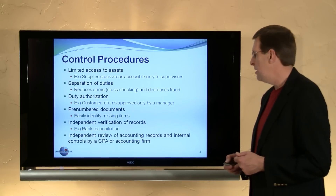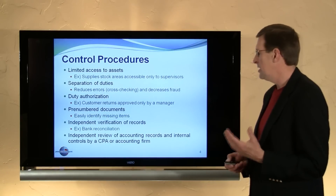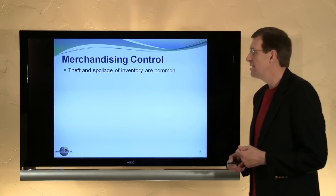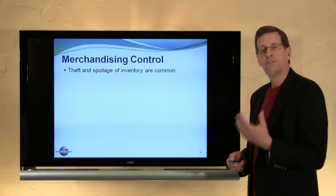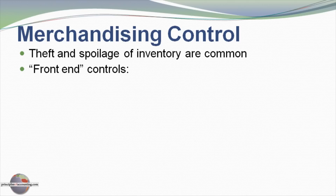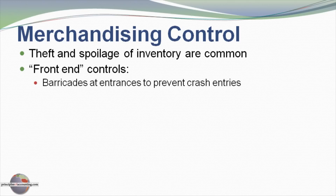It's also a good idea to have an independent audit by a CPA. In a merchandising environment we can consider a number of specific control issues. Theft and spoilage are very common in a retail environment, so there are a number of front-end controls — controls that occur at the point where the customer meets the business. You might have barricades at the entrance to prevent somebody from driving a car through the front of the door and stealing inventory.